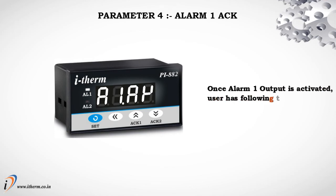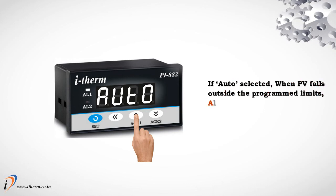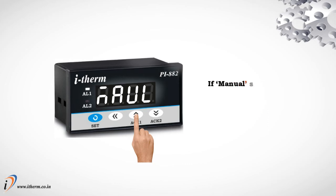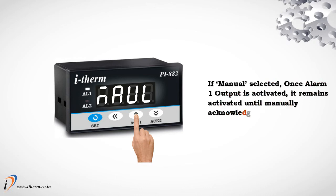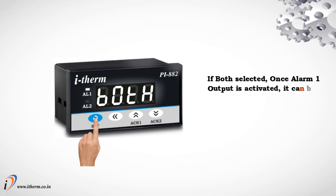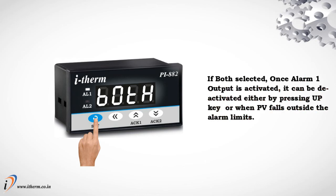Parameter 4: Alarm 1 Acknowledge. Once alarm 1 output is activated, the user has three options to deactivate it. If Auto selected, alarm 1 output will be deactivated automatically when process value falls outside the programmed limits. If Manual selected, it remains activated until manually acknowledged by the Up key. If Both selected, it can be deactivated either by pressing the Up key or when process value falls outside alarm limits.